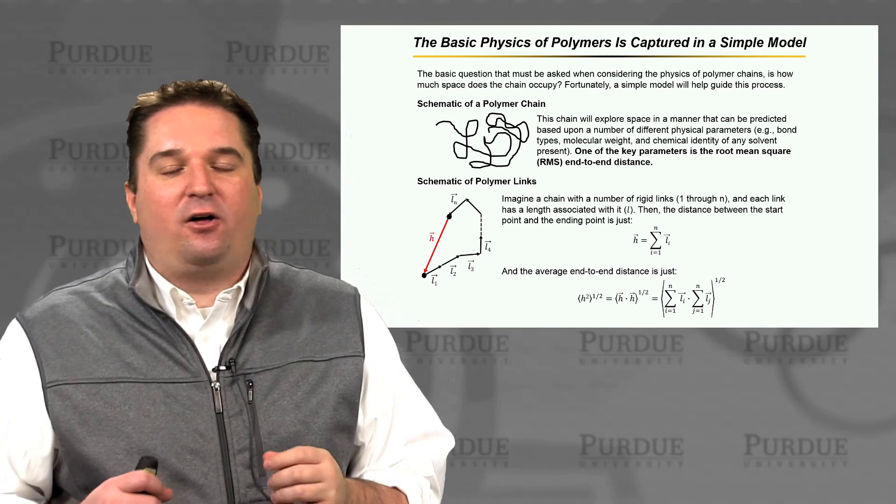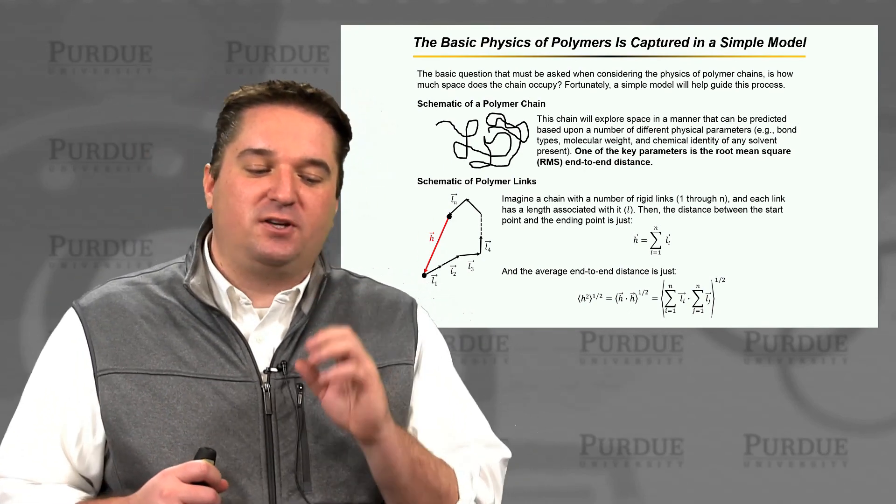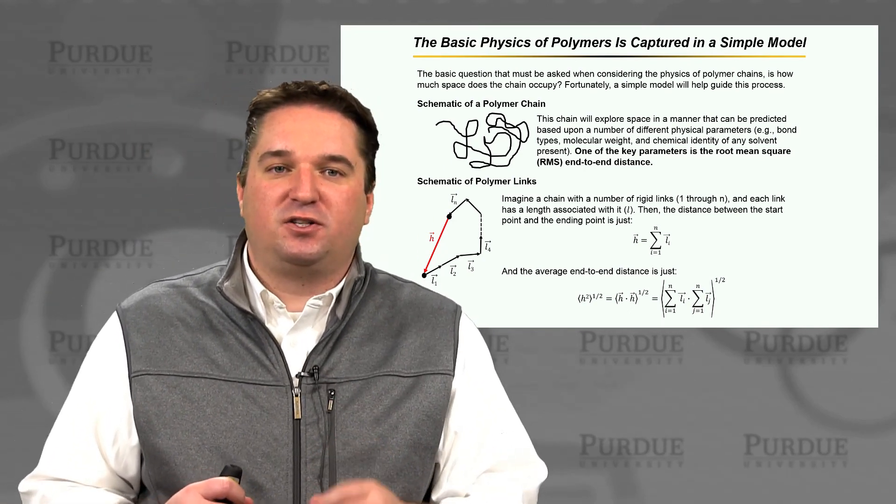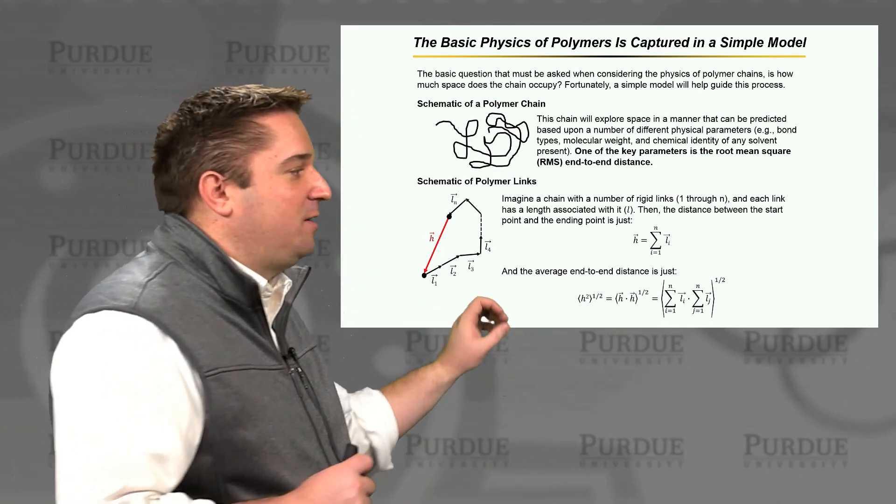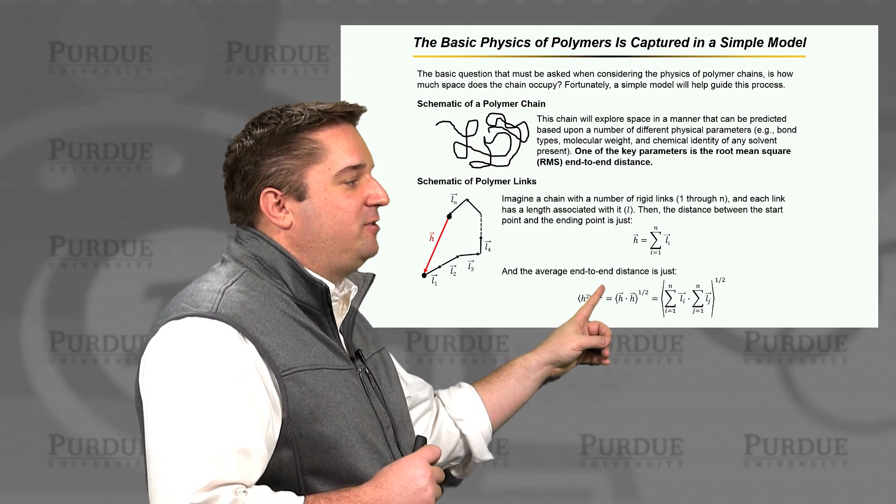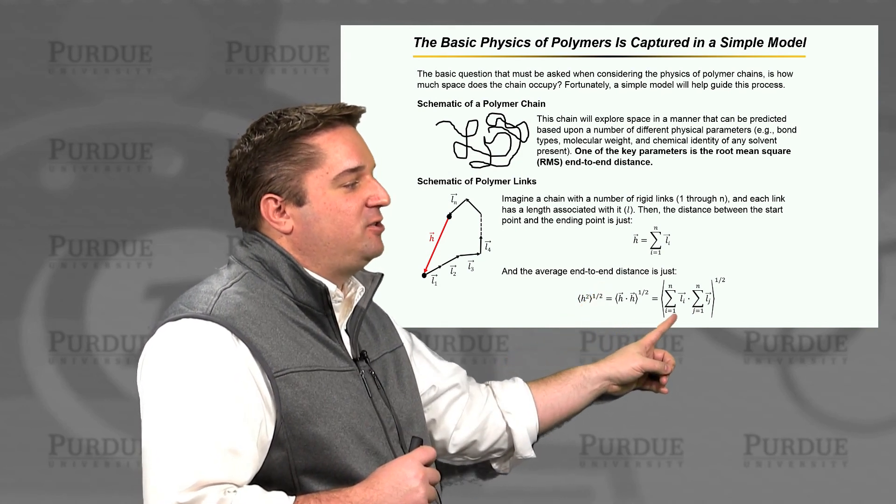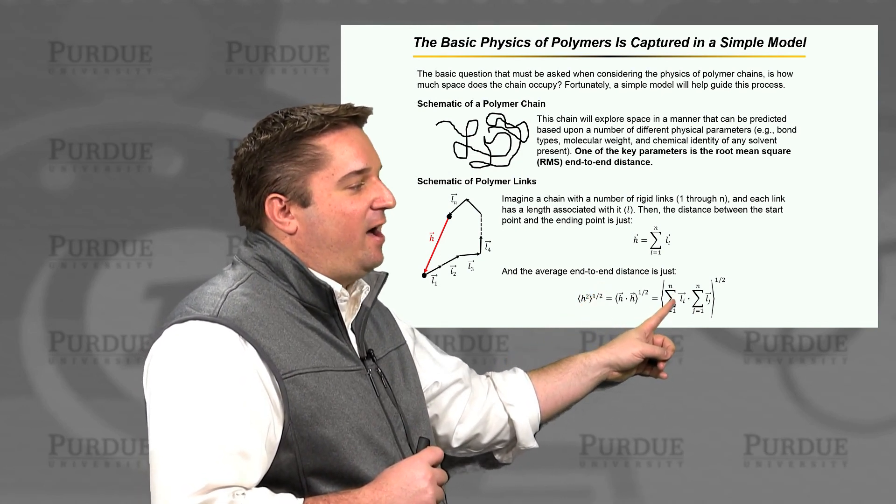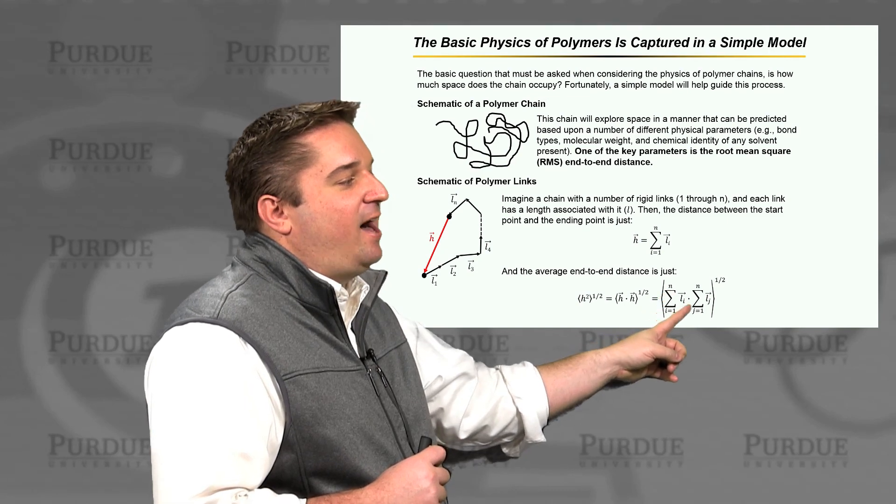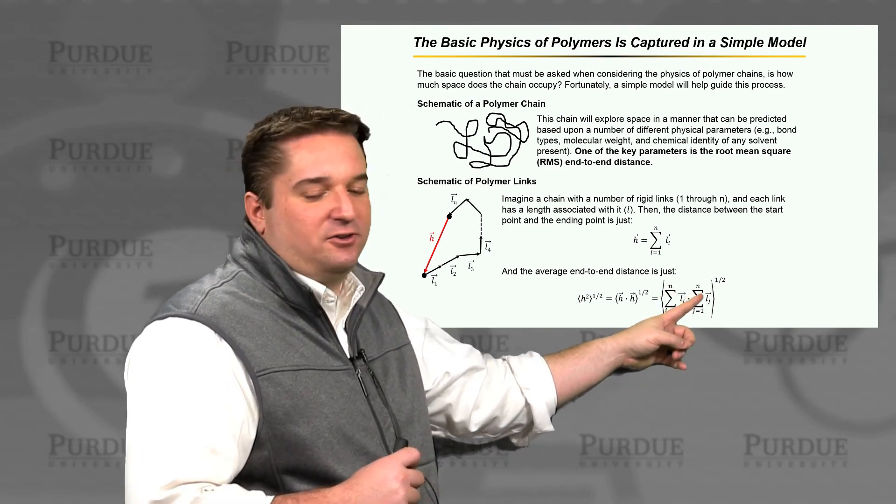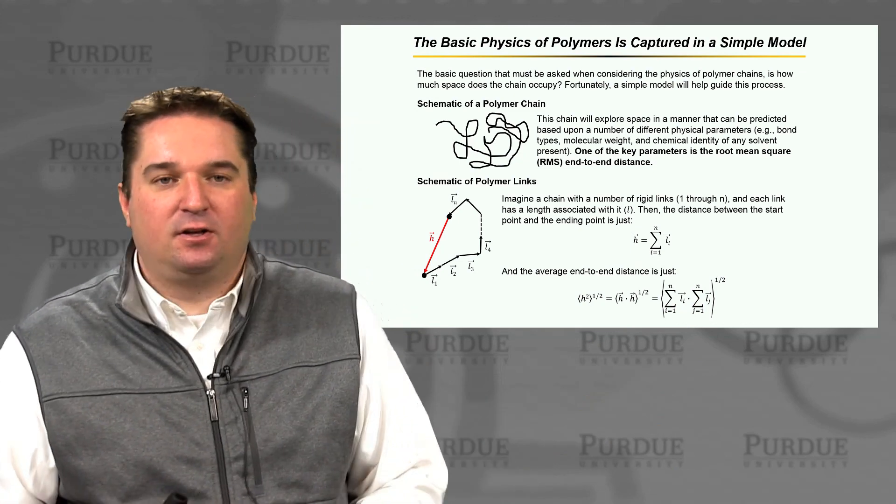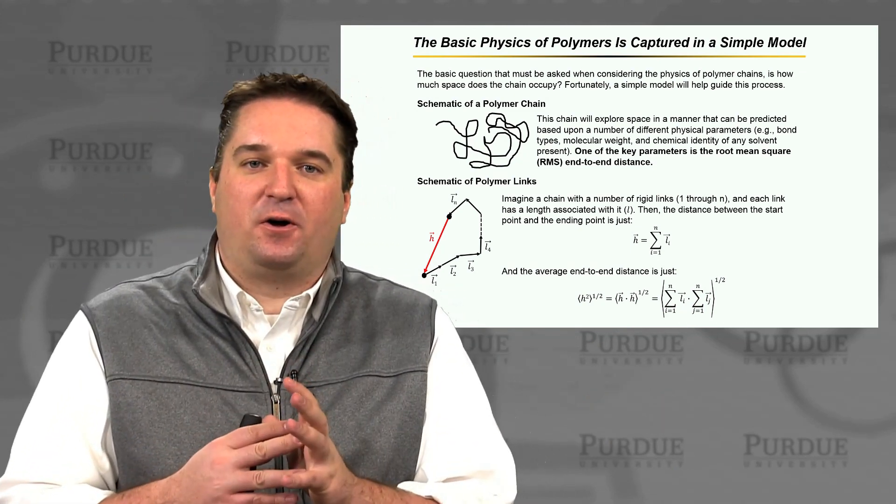And if you recall, the average end-to-end distance, so the root mean squared distance there, is just going to be the product of the dot products, h-bar times h-bar to the 1 half power. And if we do that, that's just going to be the summation of links Li, from i equals 1 to n, dotted with the summation of links j equals 1 to n, all to the 1 half power. So that's the idea of what's going on here.